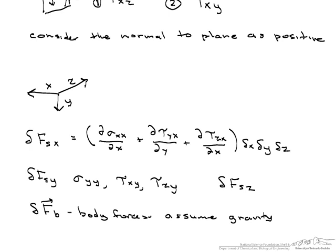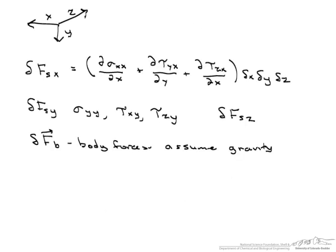So now when we sum up our differential forces, we have both our surface forces and our body forces. And notice those arrows, that indicates that these are vectors, which means we have them in the x direction, the y direction, and the z direction.